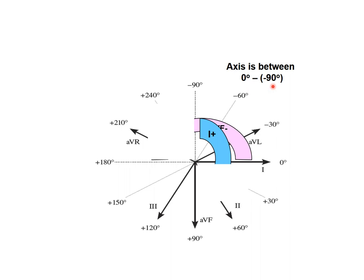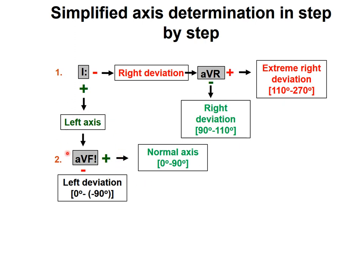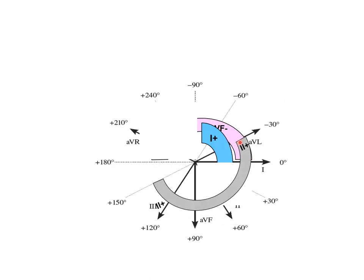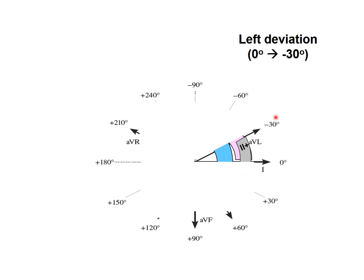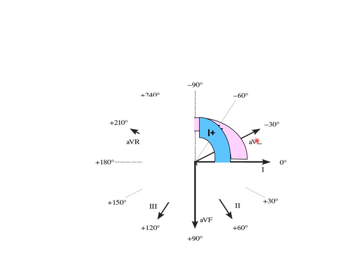If lead number 1 is positive but AVF is negative, we have left deviation — the axis is between 0 and minus 90. When AVF is positive, that's normal; when it's negative, we have left deviation. Lead number 2 is going to tell us whether we have only left deviation or extreme left deviation. If lead number 2 is positive, we have left deviation ranging from 0 to minus 30. If lead number 2 is negative, we have extreme left deviation.